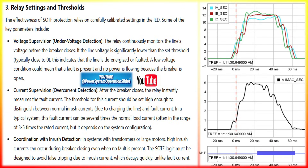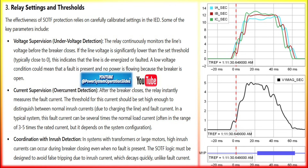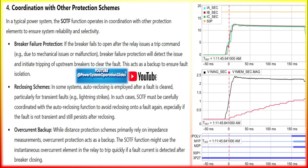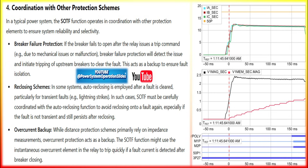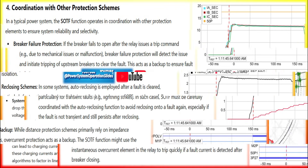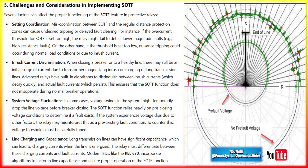The SOTF function can involve multiple protection elements, including distance protection elements. Normally, distance relays divide the line into protection zones; however, during an SOTF condition, the relay doesn't rely on the conventional zone-based tripping mechanism. It may use Zone 1 immediate tripping or even an overcurrent element. The SOTF function may also utilize overcurrent relay elements — instantaneous or definite time — to trigger faster tripping. Additionally, voltage supervision uses a sudden drop in voltage or low voltage before closing as another indication of faulted conditions, helping to differentiate between faulted and healthy conditions.